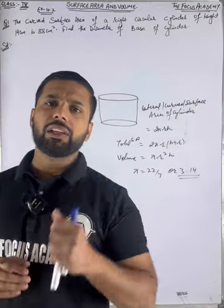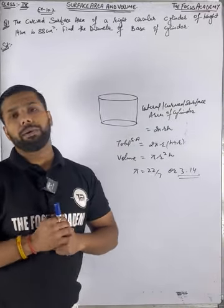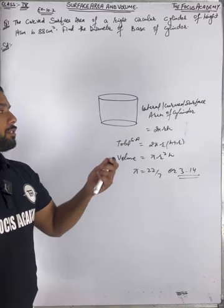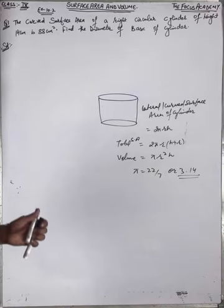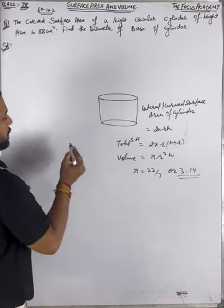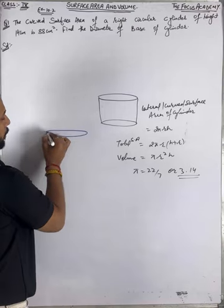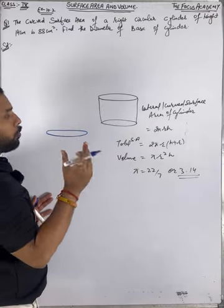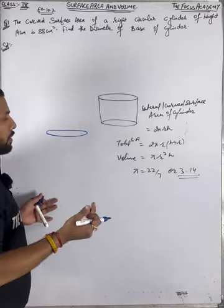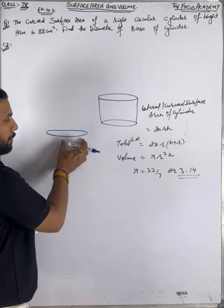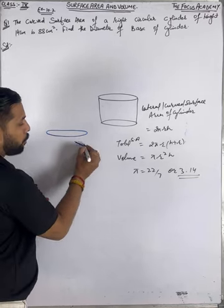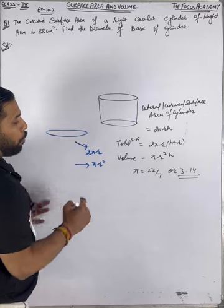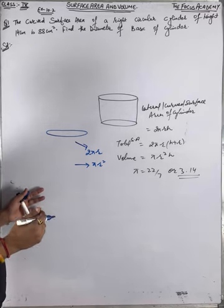Now let me try to explain how 2πrh comes about. As I told you in cuboids — edges, core and sides. Remember, I have a coin. Let us suppose this is one coin, which is a circular shape. The outer part is called the circumference. The circumference of a circle is 2πr. The area of a circle is πr², and the circumference of a circle is 2πr.